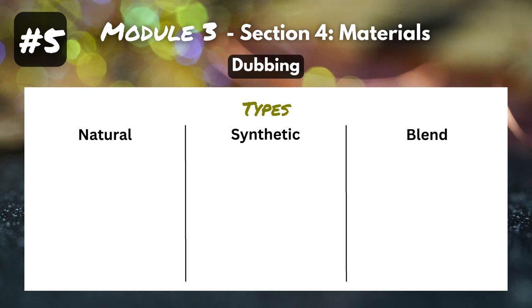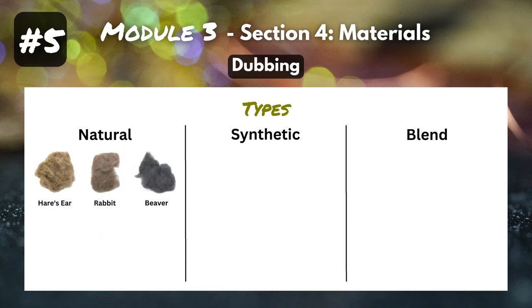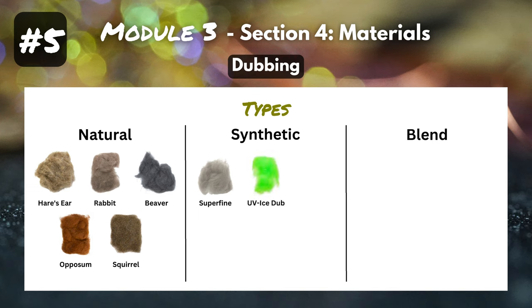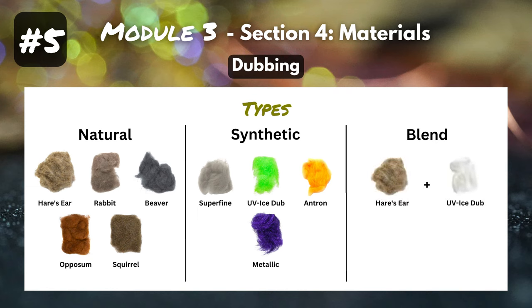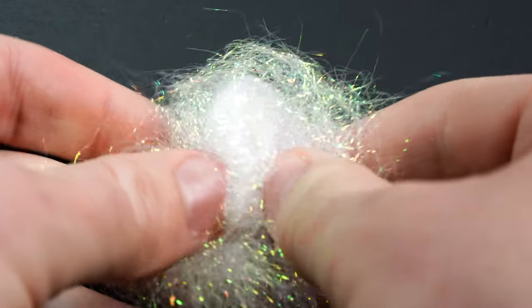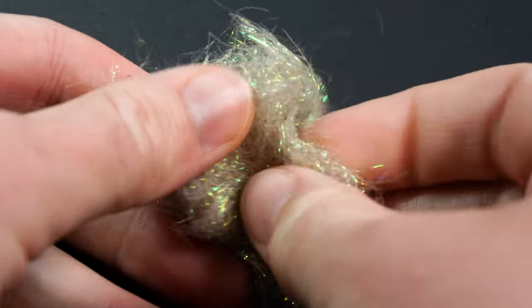Natural dubbing is actually fur that's been cut closely from the hide and then blended together — things like hare's ear, rabbit, beaver, possum, and squirrel. Synthetic dubbing is not a natural material but something synthesized specifically for fly tying, such as Superfine, UV Ice Dub, Antron, and even metallic dubbing. Blended dubbings are when you take a natural and a synthetic and put them together — like a hare's ear and a UV Ice Dub. You combine those and you've got a natural looking hare's ear with a little bit of flash from that ice dub.